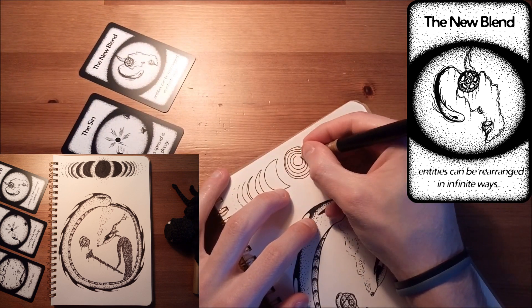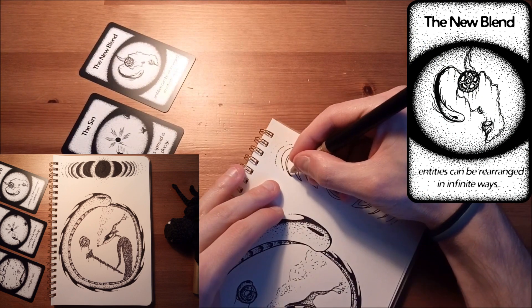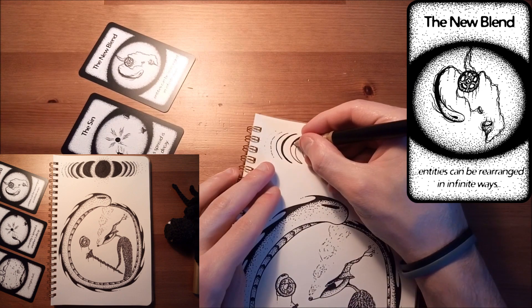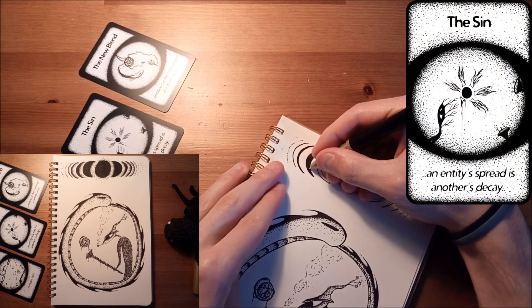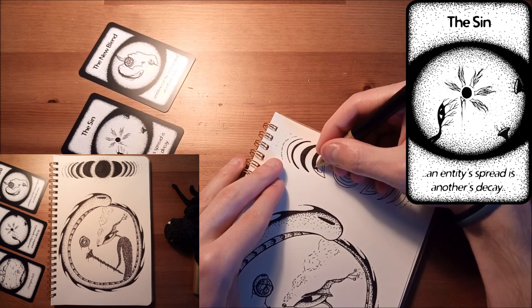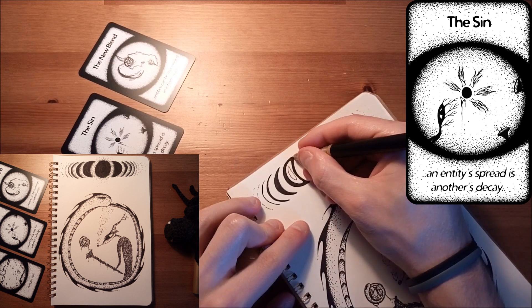But anyway, let's finally get to the last pathway, and the last card that I used for this doodle, which was 'The Sin,' which states that an entity's spread is another's decay. And for this particular pathway, and this particular idea, I actually didn't have a specific interpretation that I would use in the doodle.